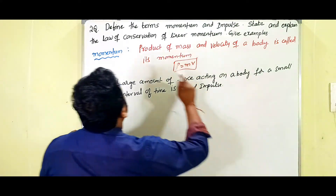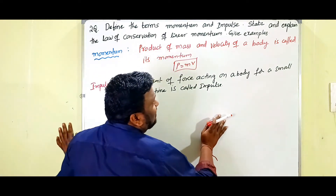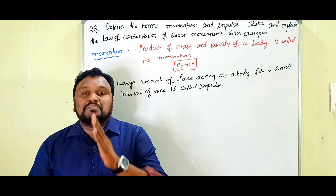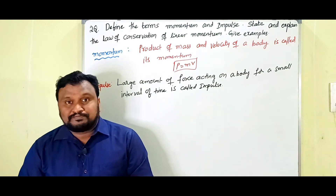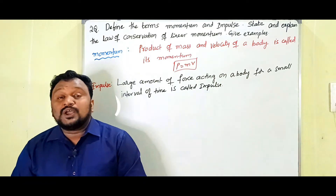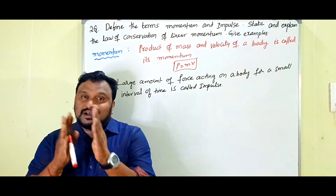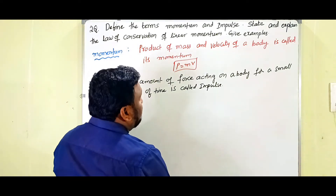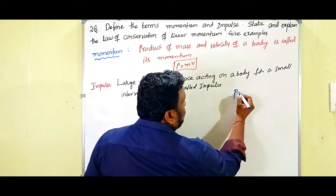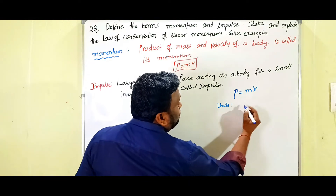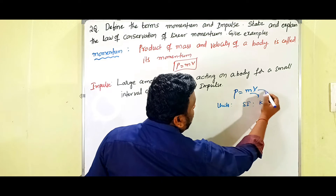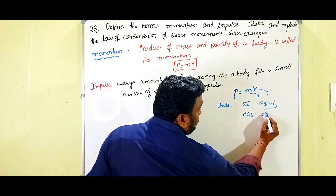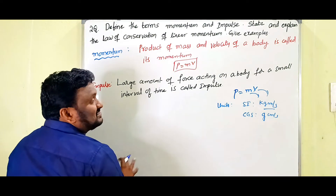What we know about momentum: a body which has some mass and velocity is conscious of momentum. Simply, the product of mass and velocity of a body is called its momentum. It is given by the equation p = mv. The SI units of momentum are kg·m/s, and CGS units are g·cm/s.